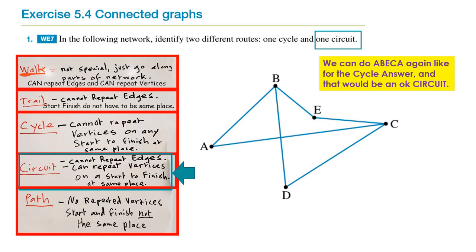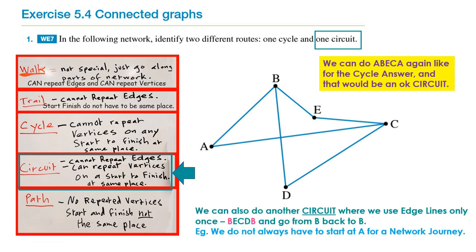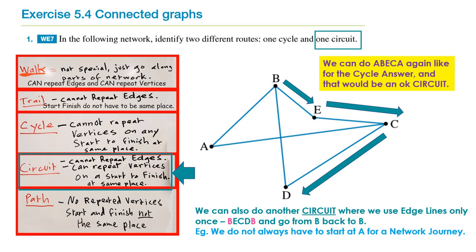Now we're doing the same shape but doing a circuit. We could go A to B to E to C to A — that's a circuit because we've only gone along each line once. But there's another answer: starting at B, going B to E, then to C, then down to D, then up to B. That takes us from B all the way around back to B, and we've only been along each connected line once. That is also a circuit.